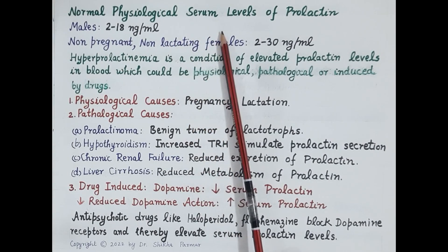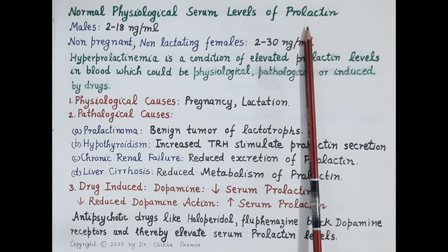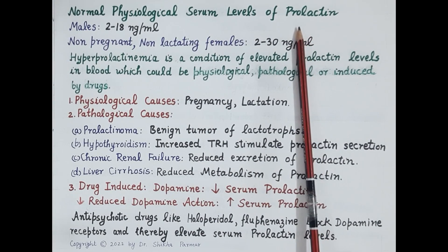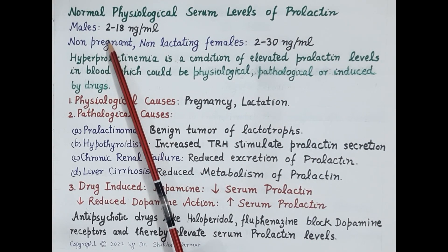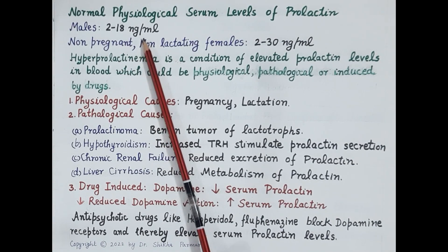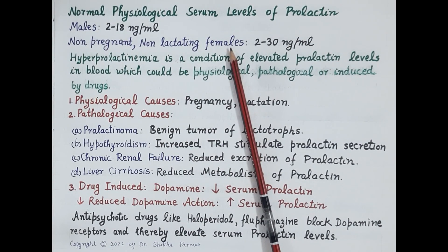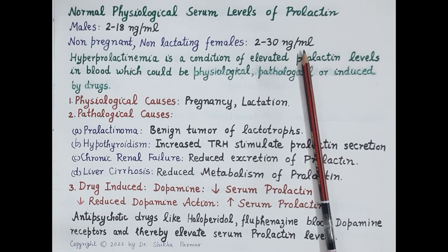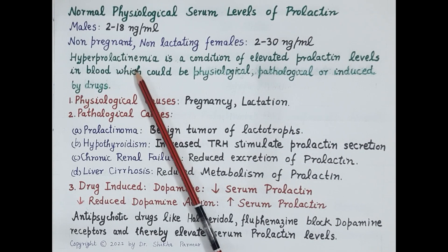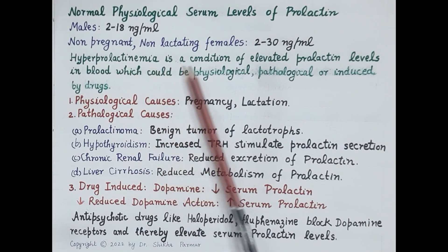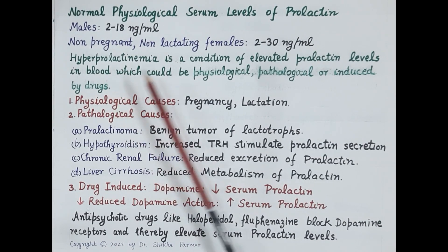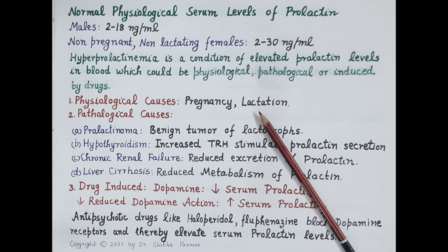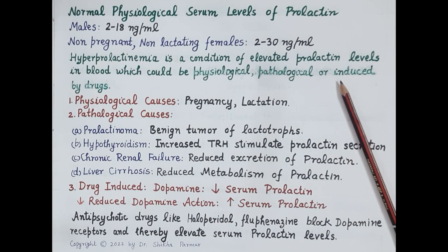Now let's talk about the normal physiological serum levels of prolactin. Prolactin levels are low in males and in non-lactating, non-pregnant females, but naturally high in pregnant and lactating women. In males, blood prolactin levels range from 2 to 18 nanogram per ml, while in non-pregnant, non-lactating females, prolactin levels range from 2 to 30 nanogram per ml. Hyperprolactinemia is the condition of elevated prolactin levels in the blood, and it can be physiological, as during pregnancy and lactation, or pathological or drug-induced.